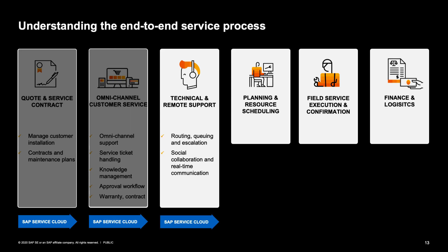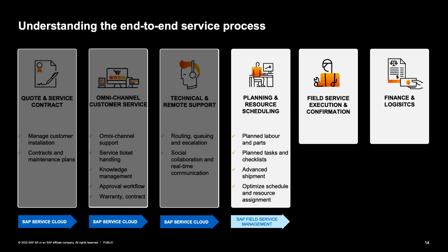Once the ticket is routed to the correct service group, the technical and remote support are performed. This may include planning of the parts and resources after determining what type of support is needed. Resources are booked to perform the service, while the system ensures that all required parts and tools are available.